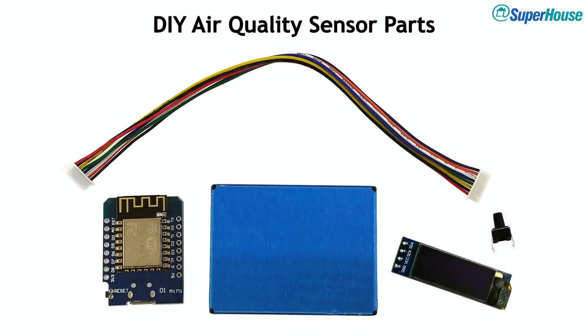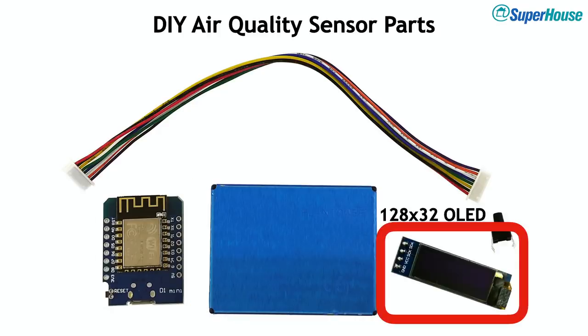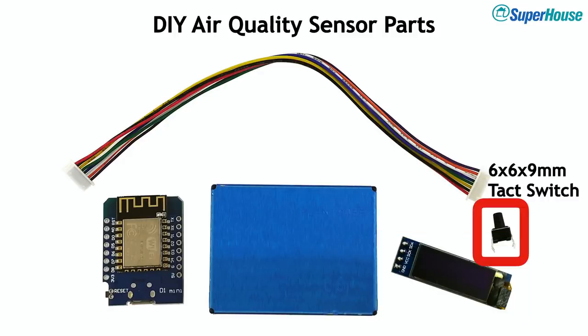But we also need a couple of new parts. We need a 128 by 32 pixel OLED display, 0.91 inch size. These things are only a couple of bucks and they've got I2C interface. They're really easy to talk to and they're awesome. I buy them about 20 at a time because I put them into all sorts of projects. They're great for doing things like displaying the IP address that a device has been assigned. And we also need a tact switch.